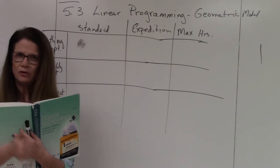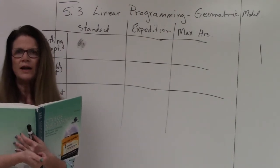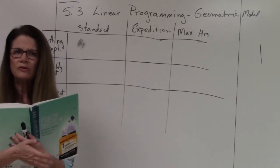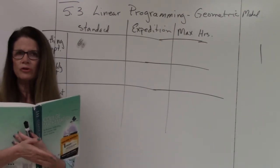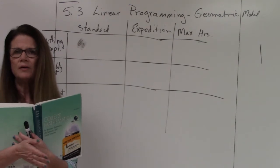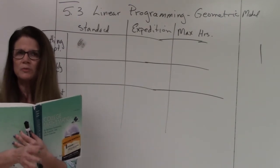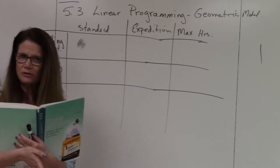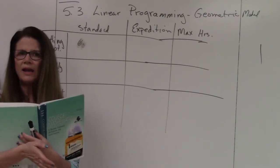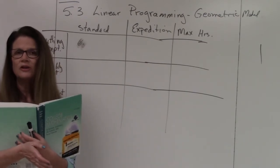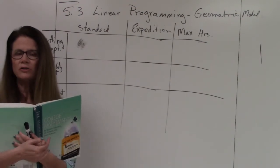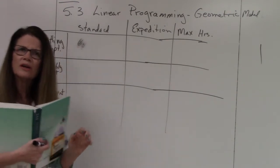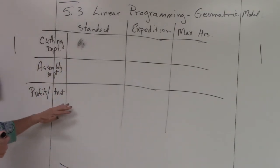You have to remember how to graph an inequality, so that is 5.1. You also have to know how to graph more than one inequality and whether the feasible region is bounded or unbounded, and that is 5.2. Section 5.3 just puts it all together and adds one more aspect to it.